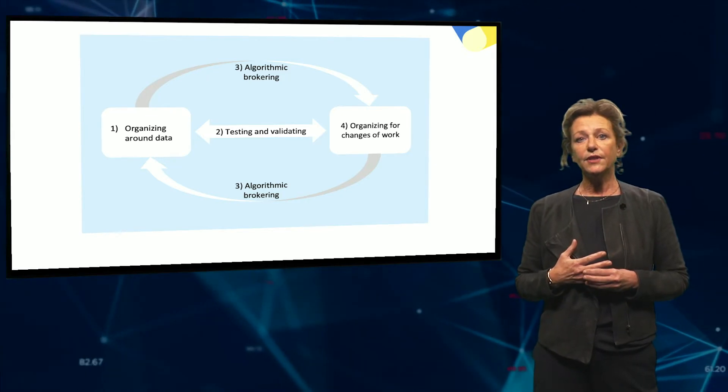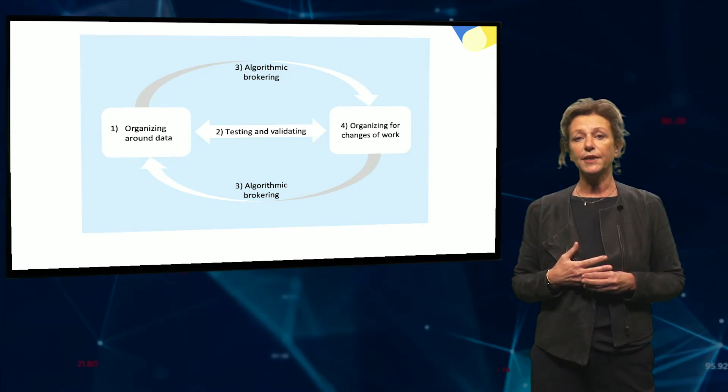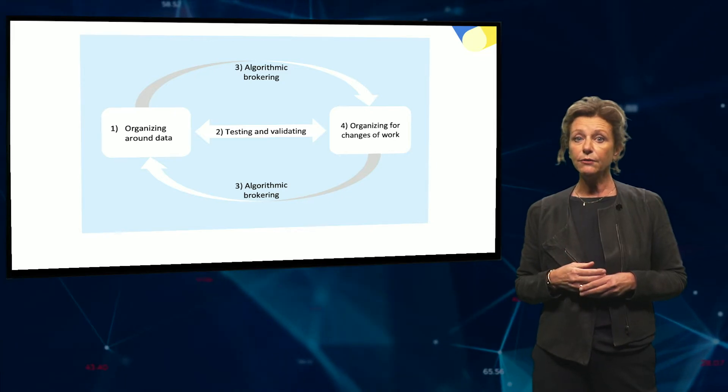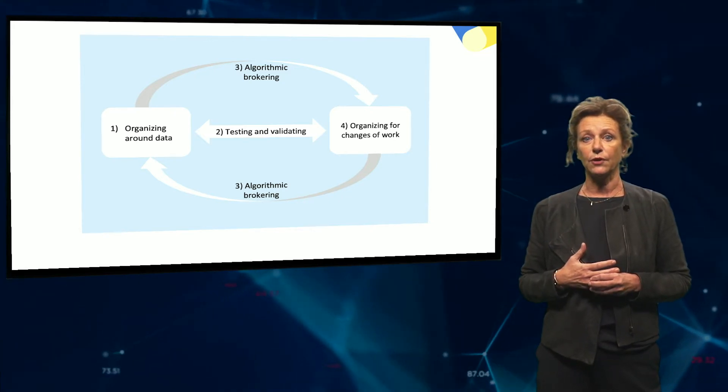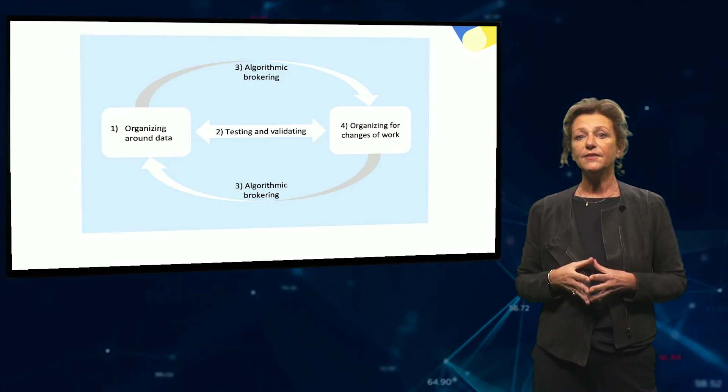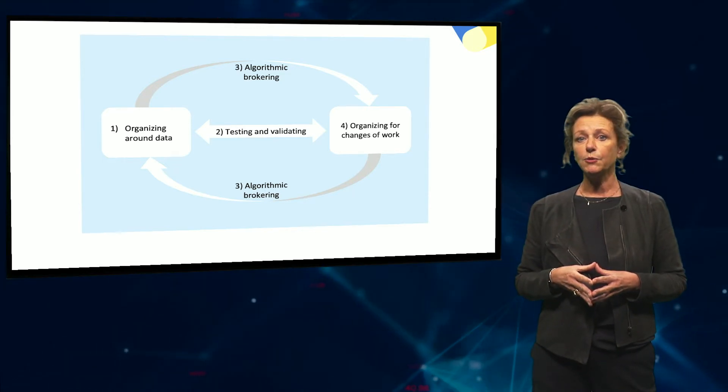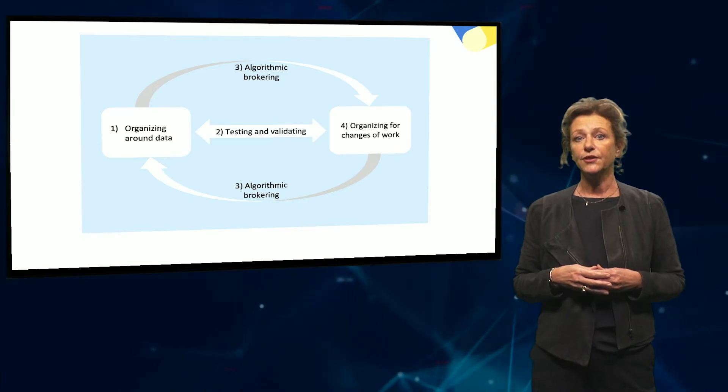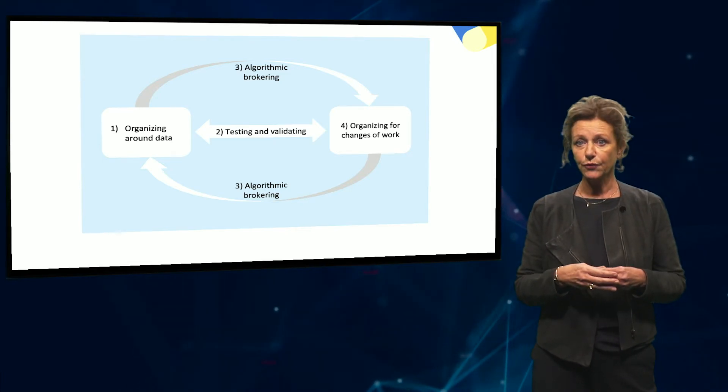For example, when the Dutch police was introducing a predictive policing system, a new role of an intelligence officer was introduced to do the brokerage work. These intelligence officers were responsible for making the AI-generated crime predictions useful in practice.